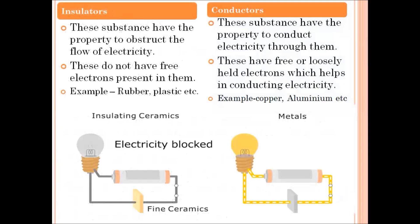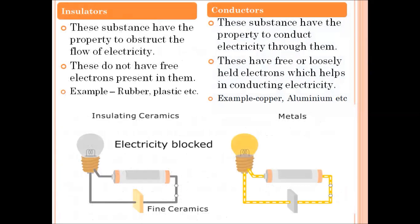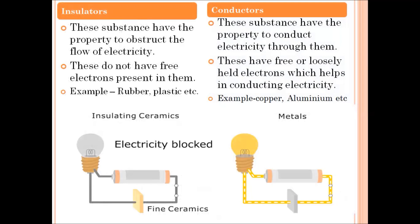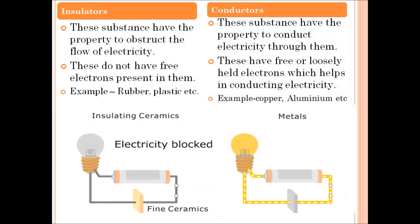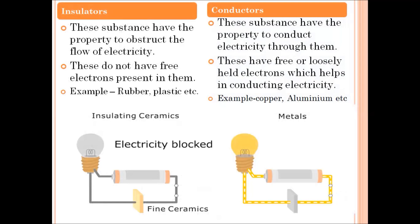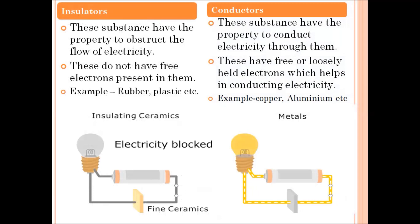Next we have insulators and conductors. Insulators are substances that obstruct the flow of electricity — they do not allow electric charge to flow through them. Examples include rubber and plastic. Conductors are substances that conduct electricity through them — they allow electric charge to flow through them easily. Examples include copper and aluminum.